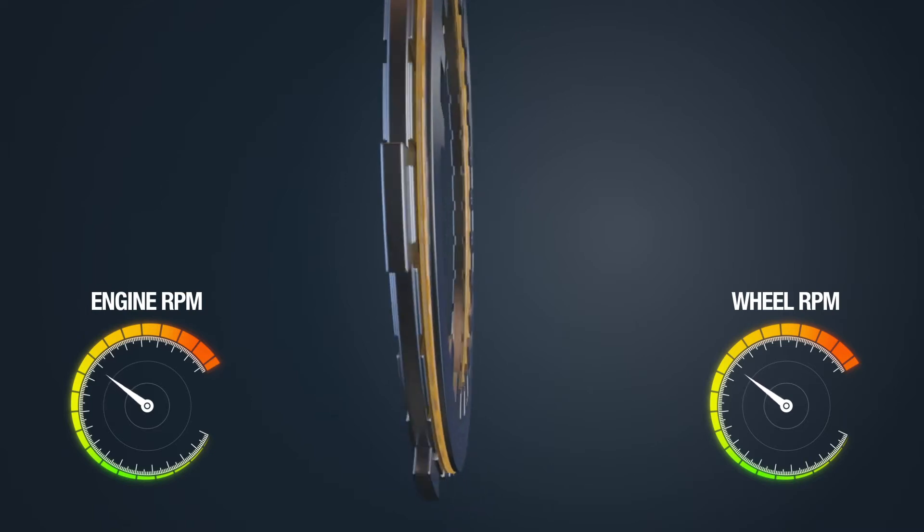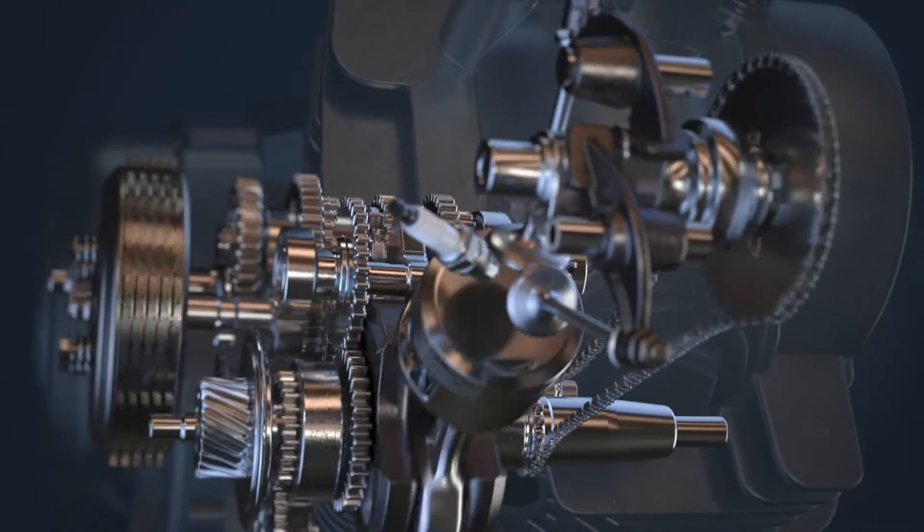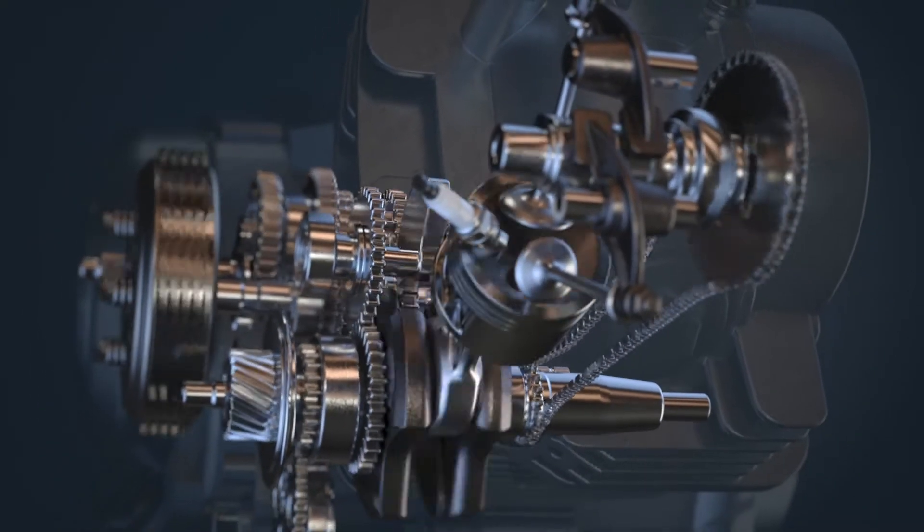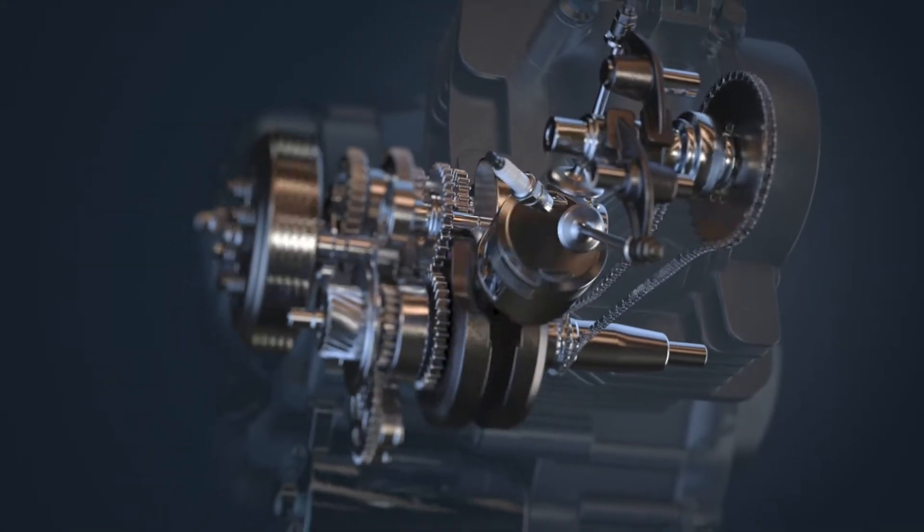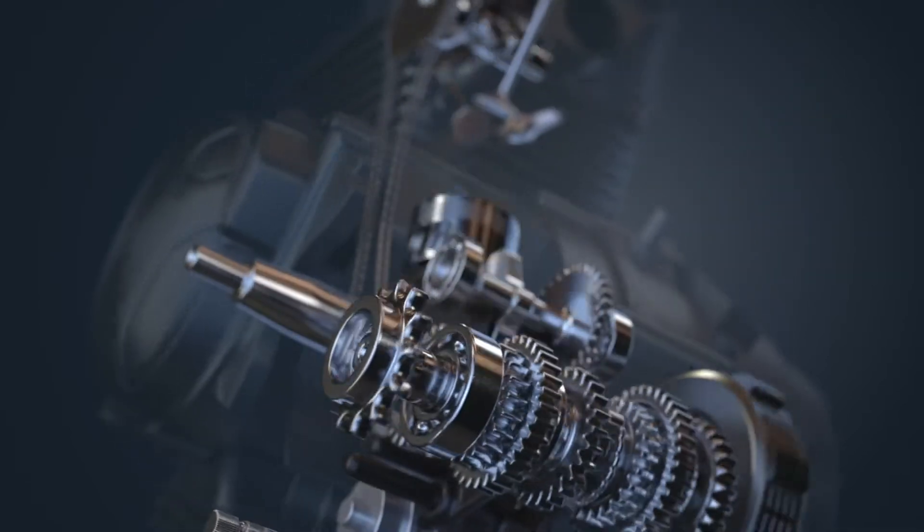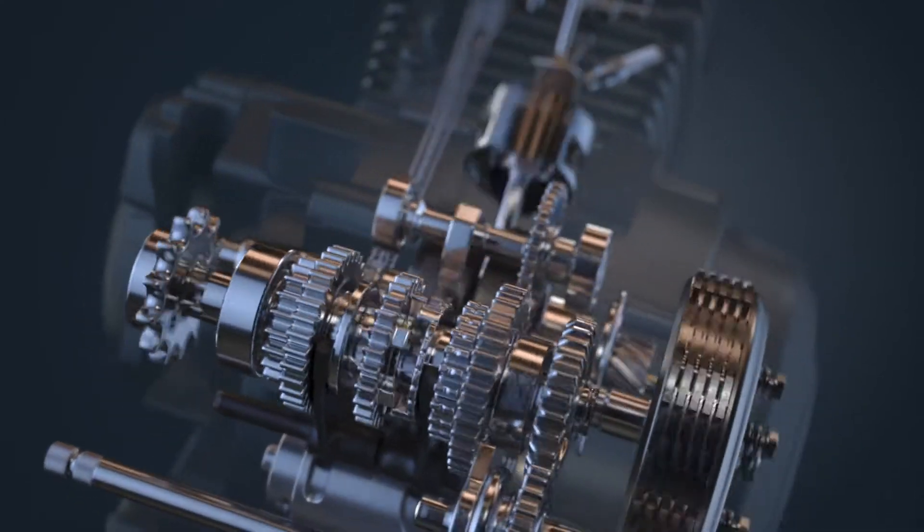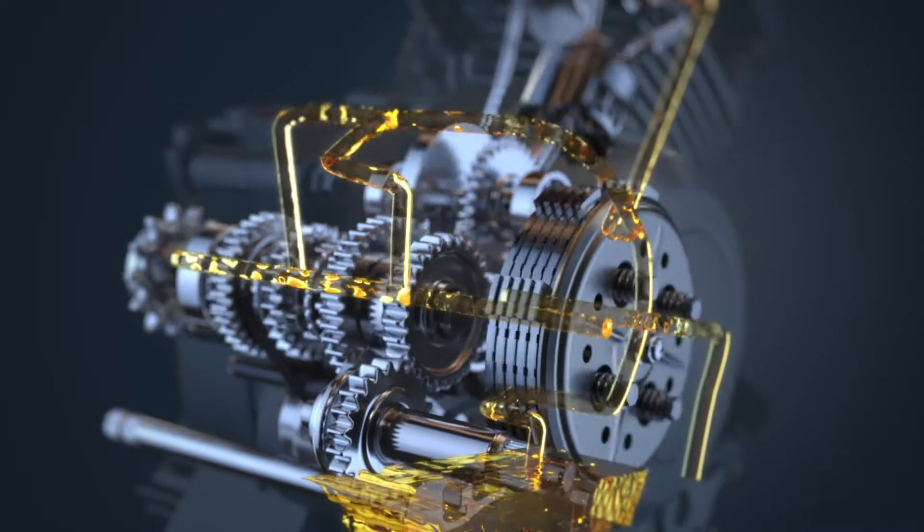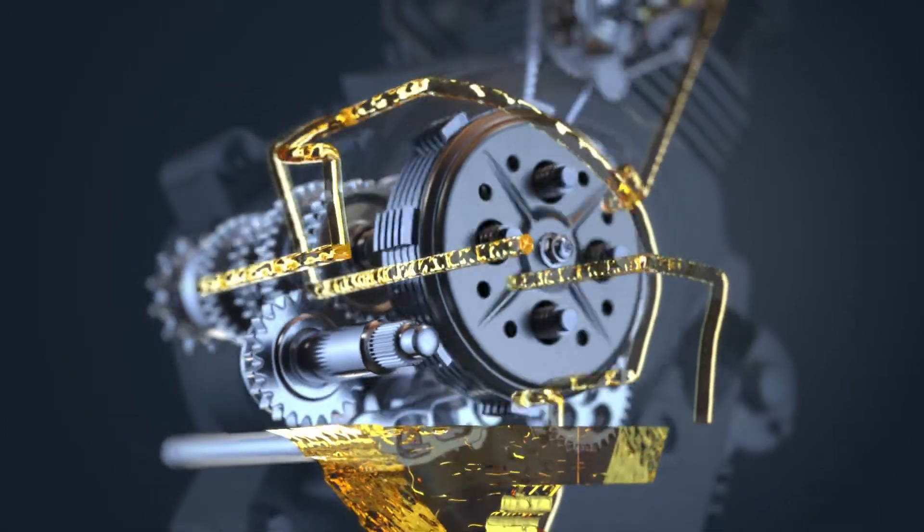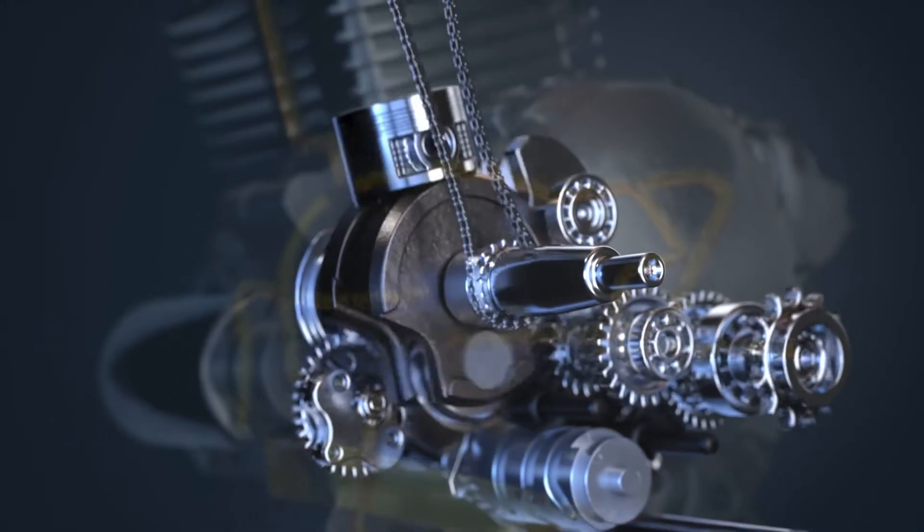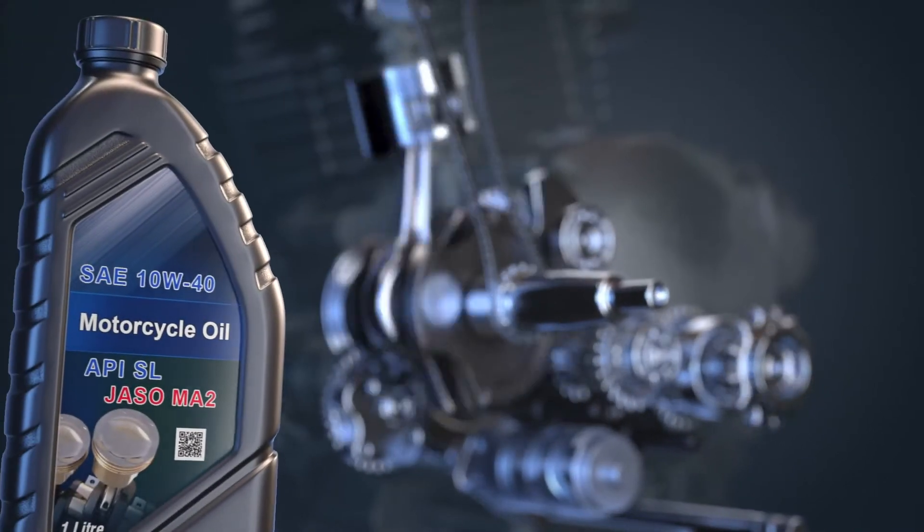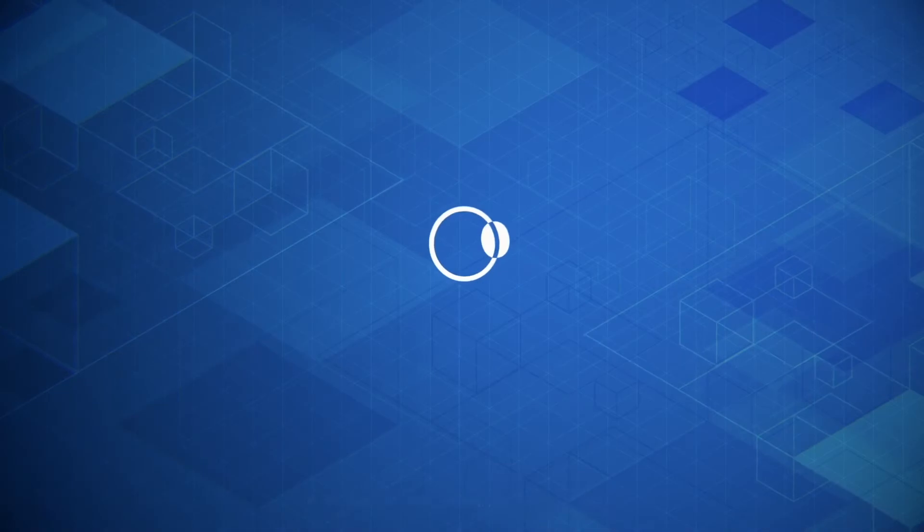It is therefore important that the motorcycle oils you formulate consist of the right additive chemistry, which provides enhanced high temperature deposit control, protects gears from pitting wear and delivers the right clutch friction. This is only possible if the additive chemistry is formulated keeping motorcycle applications in mind. In short, a dedicated motorcycle additive.